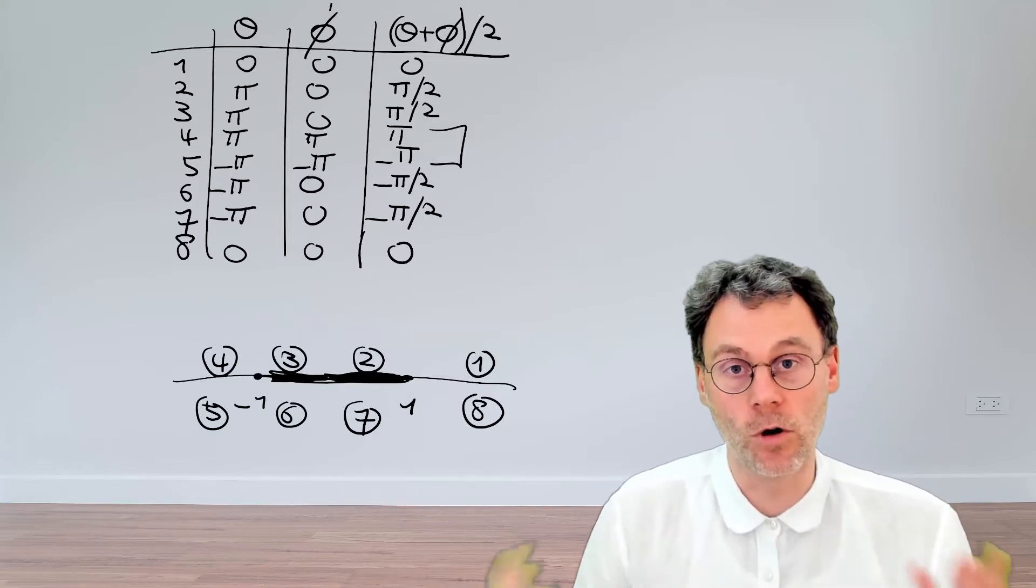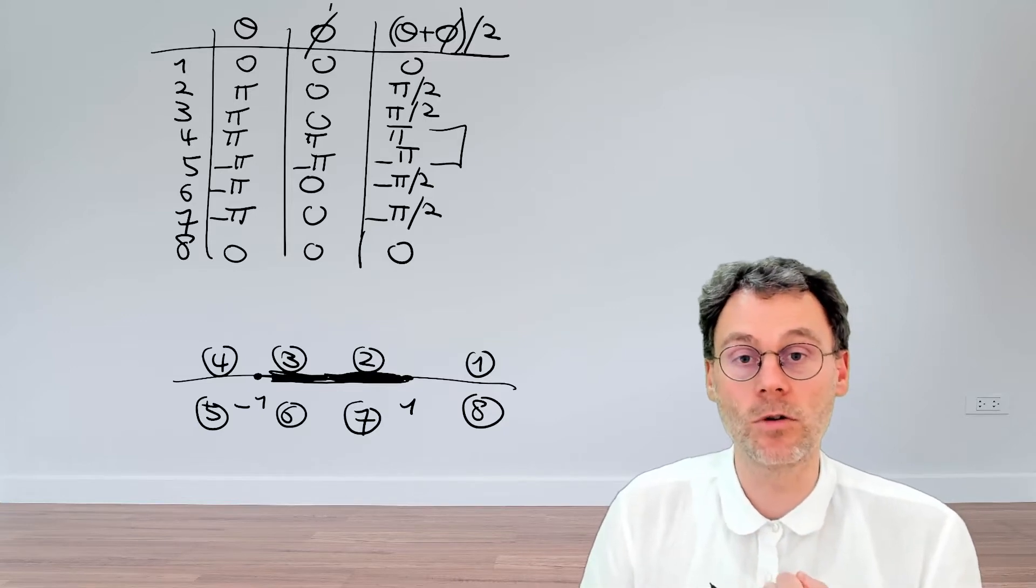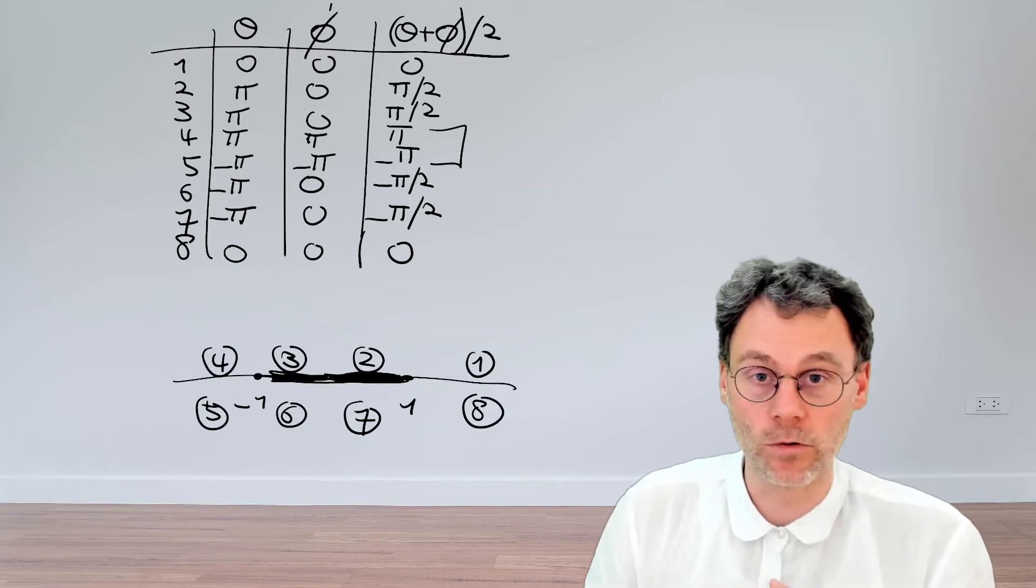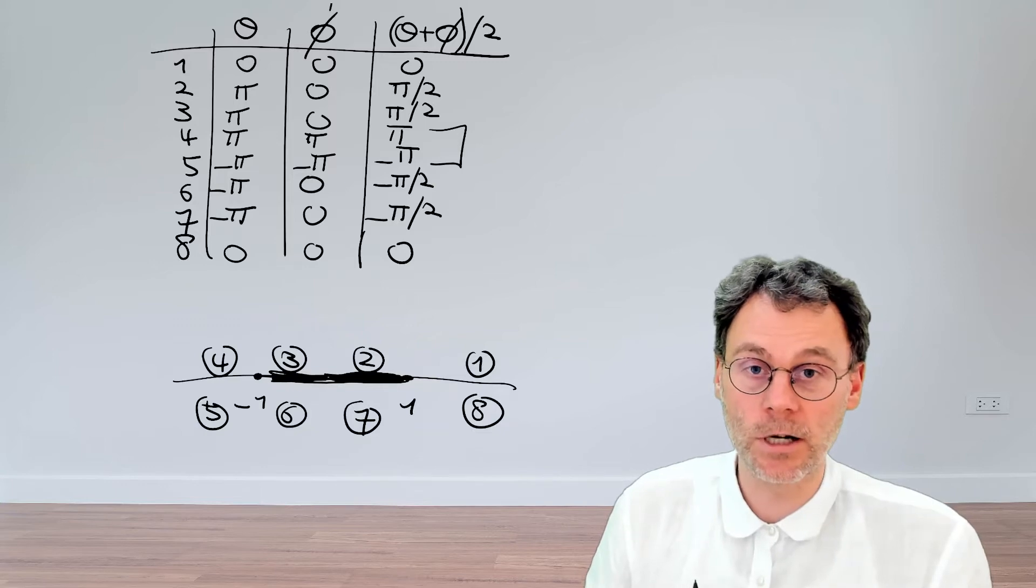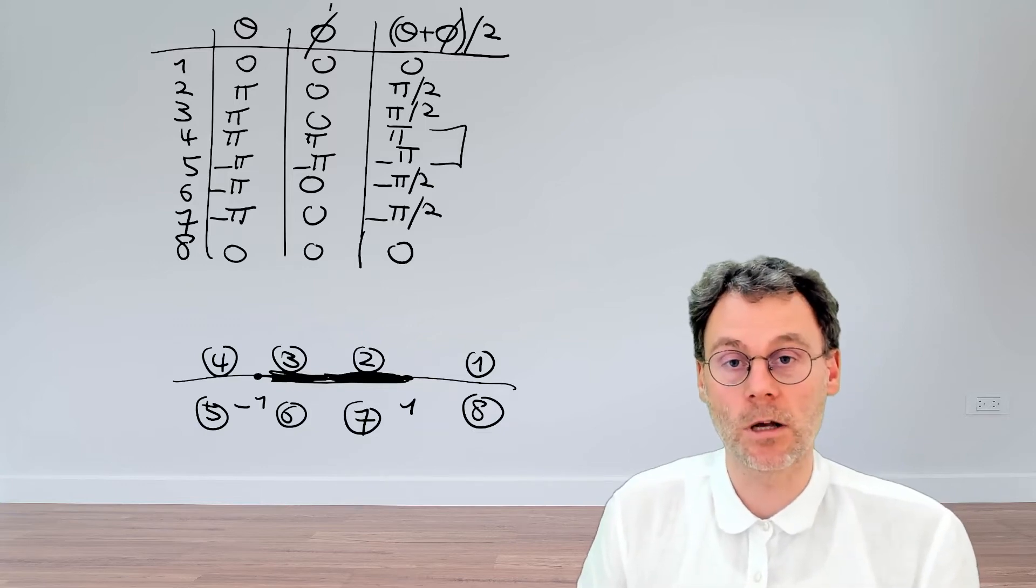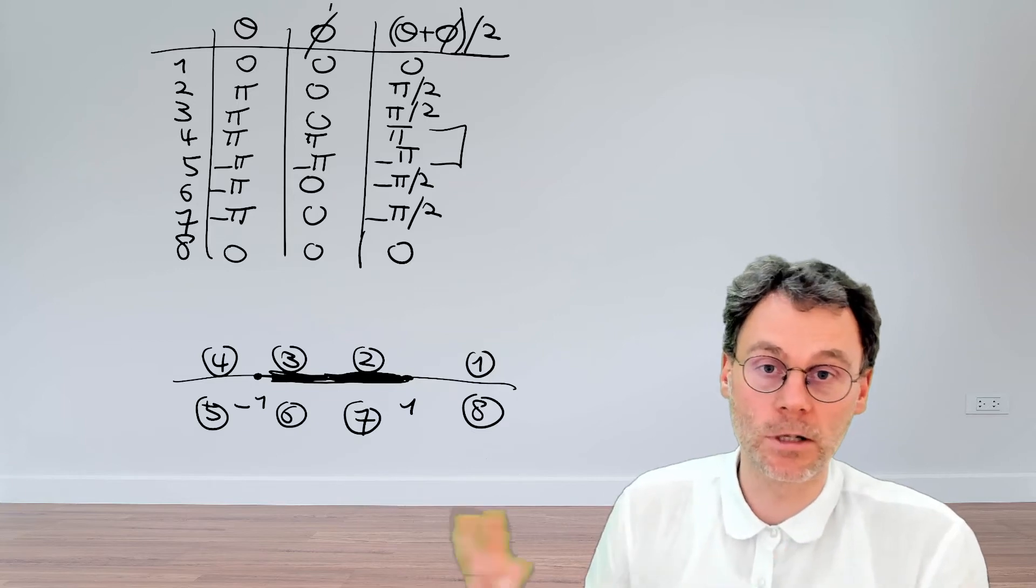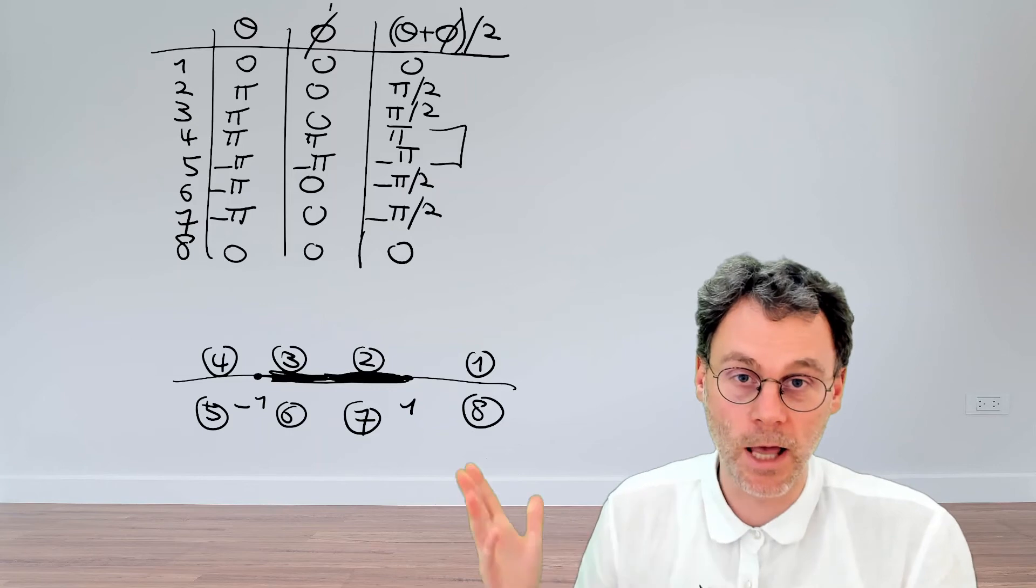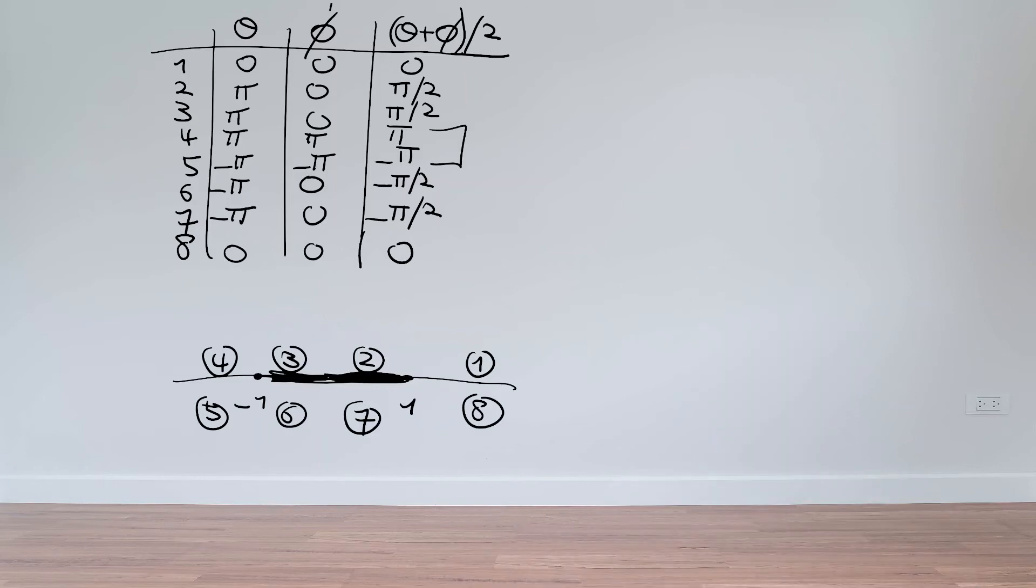So this just shows you how to calculate the location of the branch cut in case you use the conventional choice of branch cut for the individual square roots. In case you want a little bit more detail about all of this, there's another exercise which goes into different choices of branch cuts. So if you're interested in delving a little bit deeper in the wonderful world of branch cuts, have a look at that other exercise.